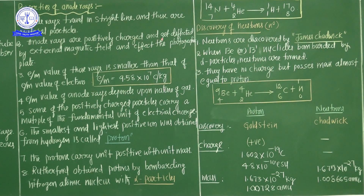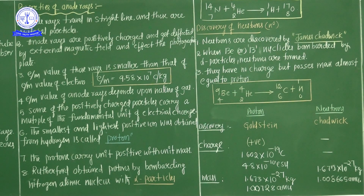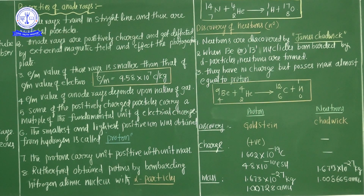Anode rays are positively charged and get deflected by an external magnetic field, and affect the photographic plate. Like cathode rays, anode rays are also deflected in an electrical field and a magnetic field. In an electrical field, anode rays are attracted towards the cathode direction because they are a stream of positively charged particles. In a magnetic field, anode rays are attracted towards the north pole direction.